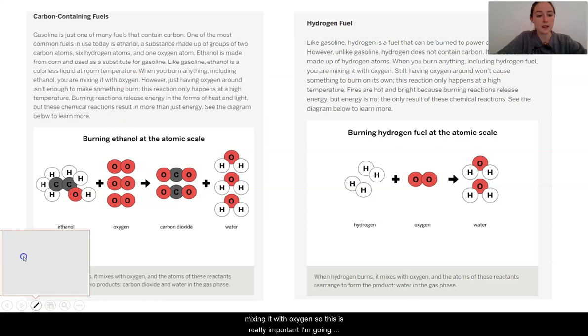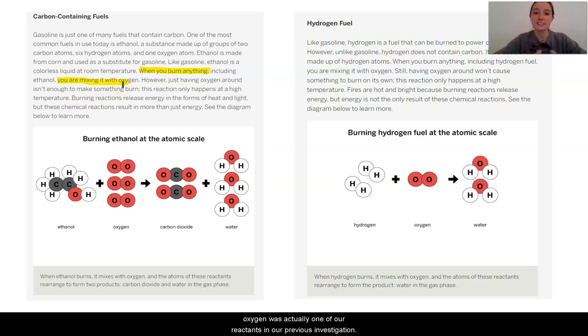So this is really important. I'm going to have our highlighter here. And I mentioned that before. But when you burn anything, it's a reaction with oxygen. So oxygen was actually one of our reactants in our previous investigation. However, just having oxygen around isn't enough to make something burn. This reaction only happens at high temperature. Okay, so that's why we had to light it on fire to cause that reaction to start occurring. Burning reactions release energy in the forms of heat and light. But these chemical reactions result in more than just energy. See the diagram to learn more.